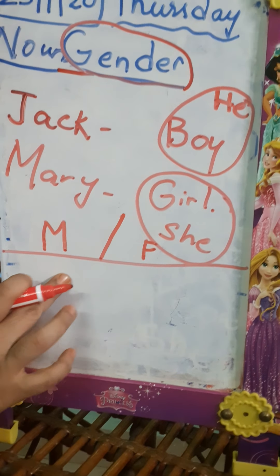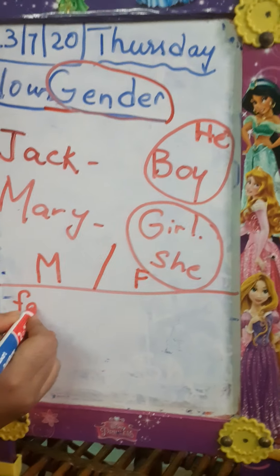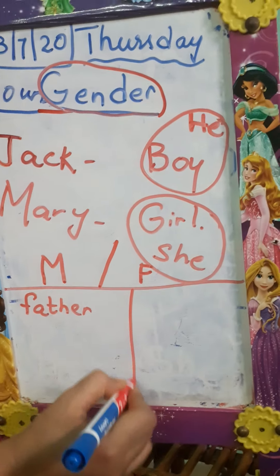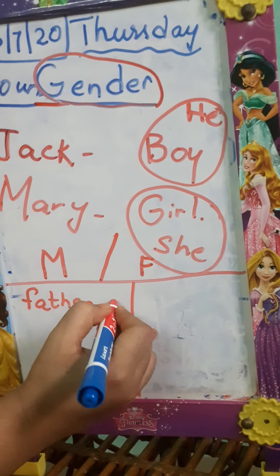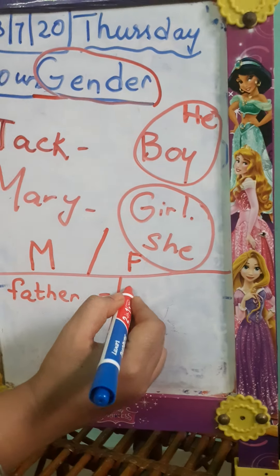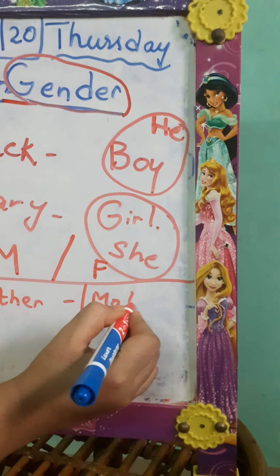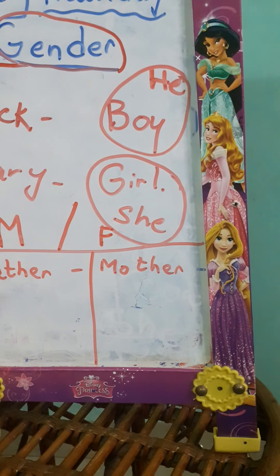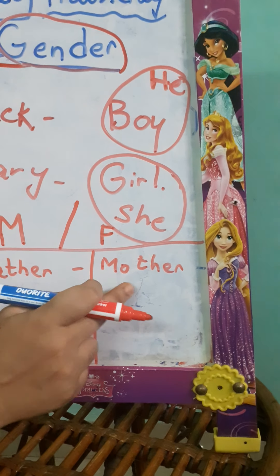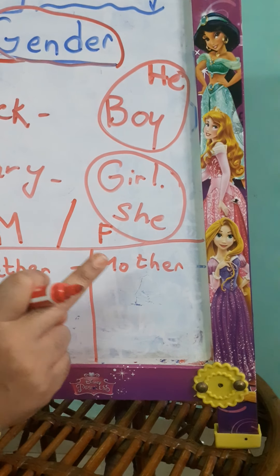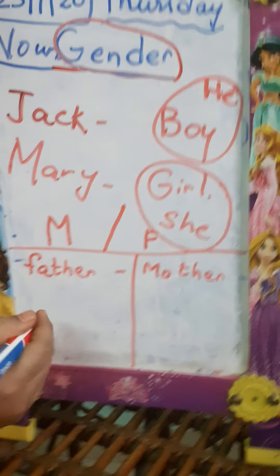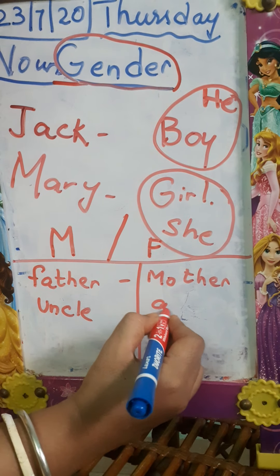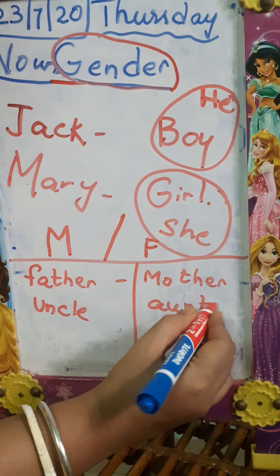In M, I am writing father. Here, what should I write, children? Mother. If I add grandfather to this, what should it be? Grandmother. Uncle — and the feminine is aunt.